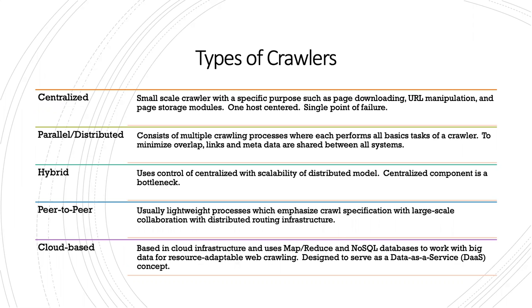For peer-to-peer, it's usually lightweight. Multiple systems will be hosting or storing data. As described in the article, it's systems on the far edges of the internet — though it's essentially a large-scale collaboration. Cloud-based is where you use cloud infrastructure to map out whatever websites you're crawling, store things in some type of database. This is designed to be a data-as-a-service concept.